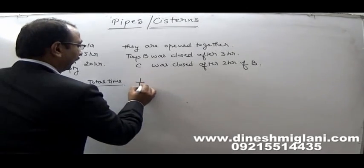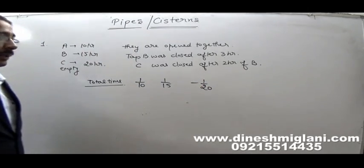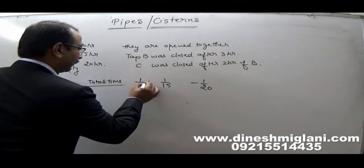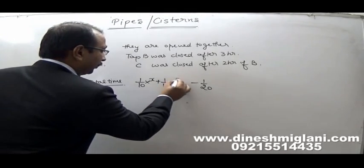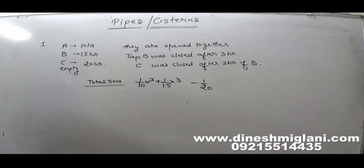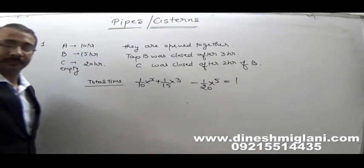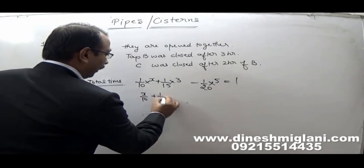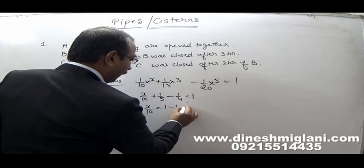A's 1-hour work is 1/10, B's is 1/15, and C's is −1/20. Let total time taken be X hours. A was filling from start to end, so A filled X/10. B was closed after 3 hours, so B filled 3/15. C was closed after 2 more hours — that is 3 + 2 = 5 hours — so C emptied 5/20. Total equals 1: X/10 + 1/5 − 1/4 = 1.